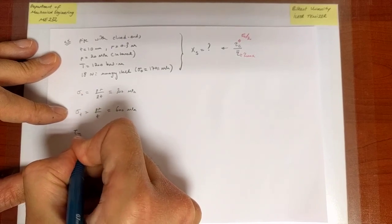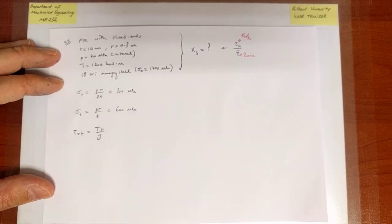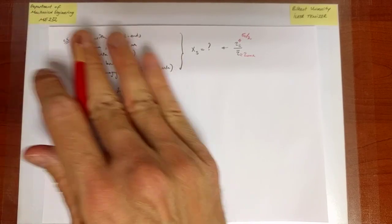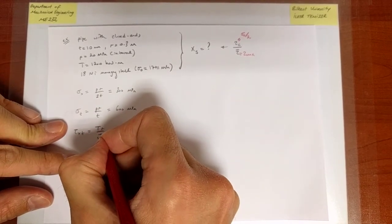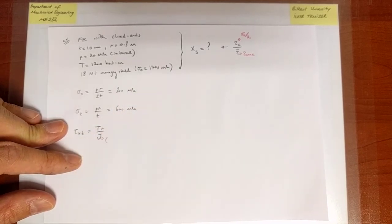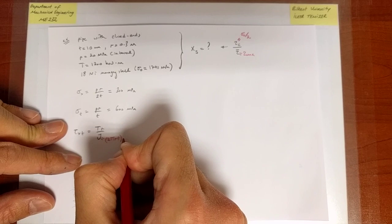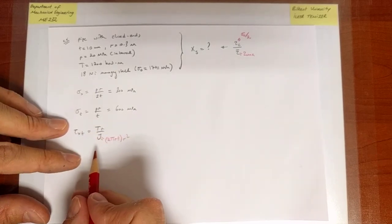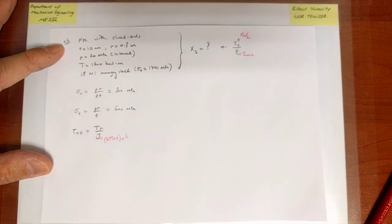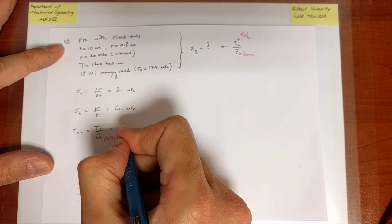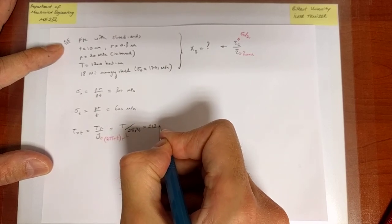There is a shear stress on the plane with normal x in the tangential direction, given by TR over J. Since we have a thin-walled structure, we use an approximate polar moment of inertia: the area of the thin cross-section is the circumference times the thickness, and we consider its second moment r-squared. The expression simplifies to T over 2πr²t, which comes out to be 212 MPa.